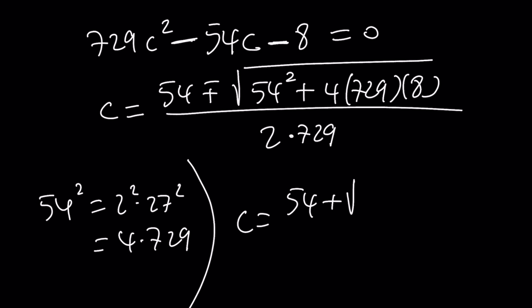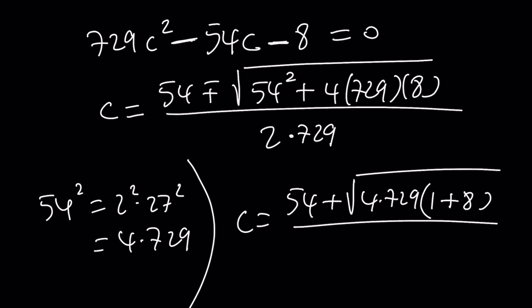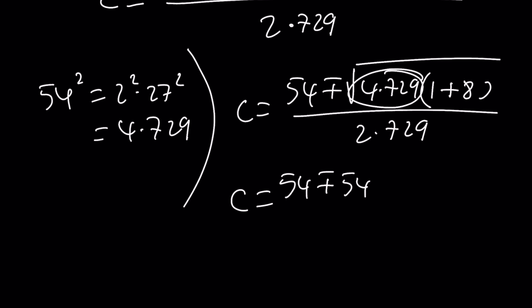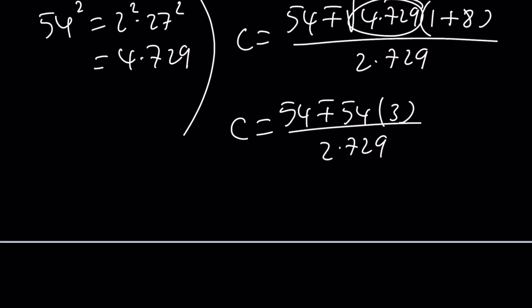If you do that, you get 4 times 729 inside the radical, giving you 1 plus 8, which is 9, and the square root of that is just 3. So we can take out 2 times 27, which is 54. We get 54 plus or minus 54 times 3 (the square root of 9), divided by 2 times 729.